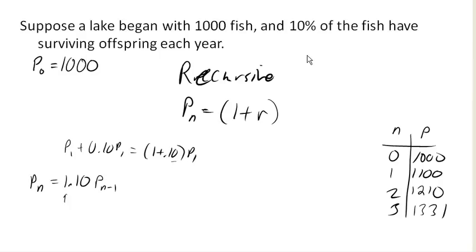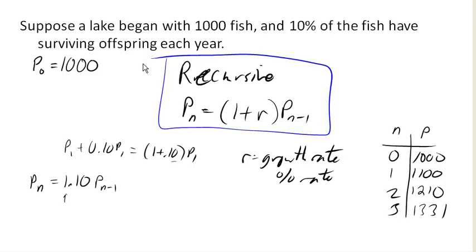This is a percentage rate times Pₙ minus 1. And so this becomes our general recursive equation for what's called exponential growth. And we'll see why it's called exponential growth in the second part.